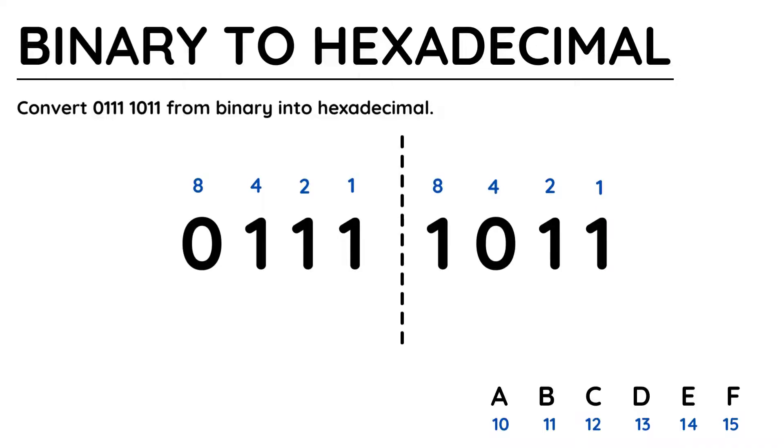I've written the binary number out neatly in the centre, and it's optional, but I always draw a dashed line between the two sets of 4 bits. When working with hexadecimal, we treat groups of 4 bits separately, and 4 bits is known together as a nibble.